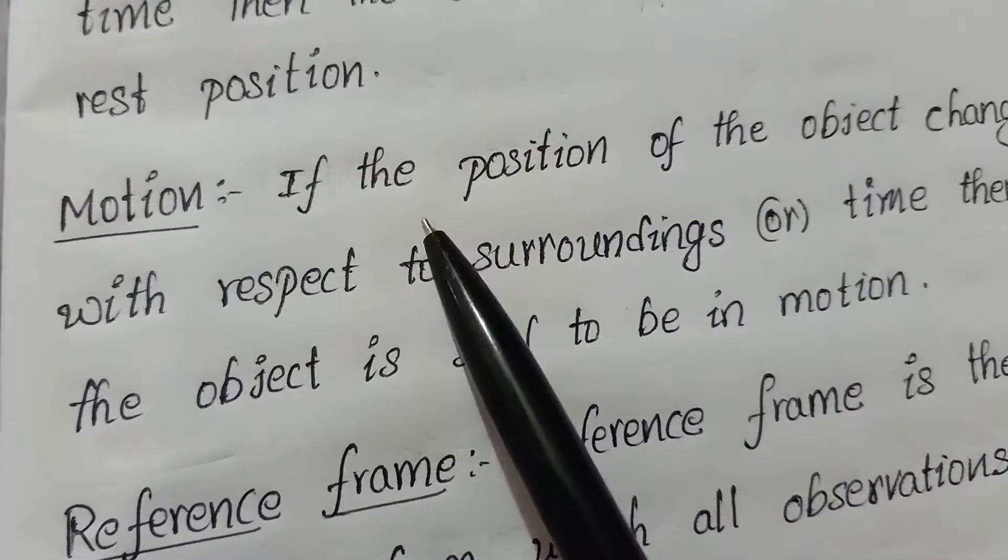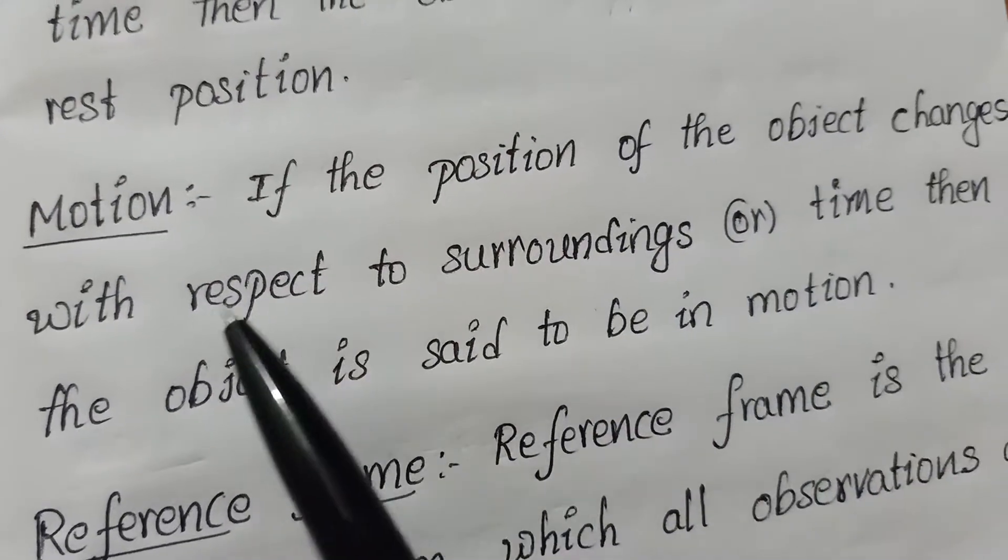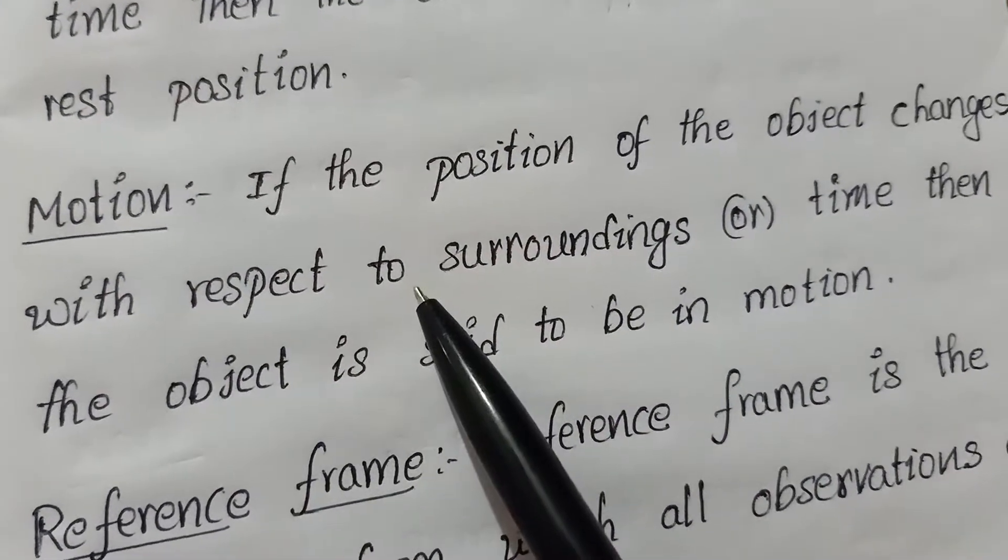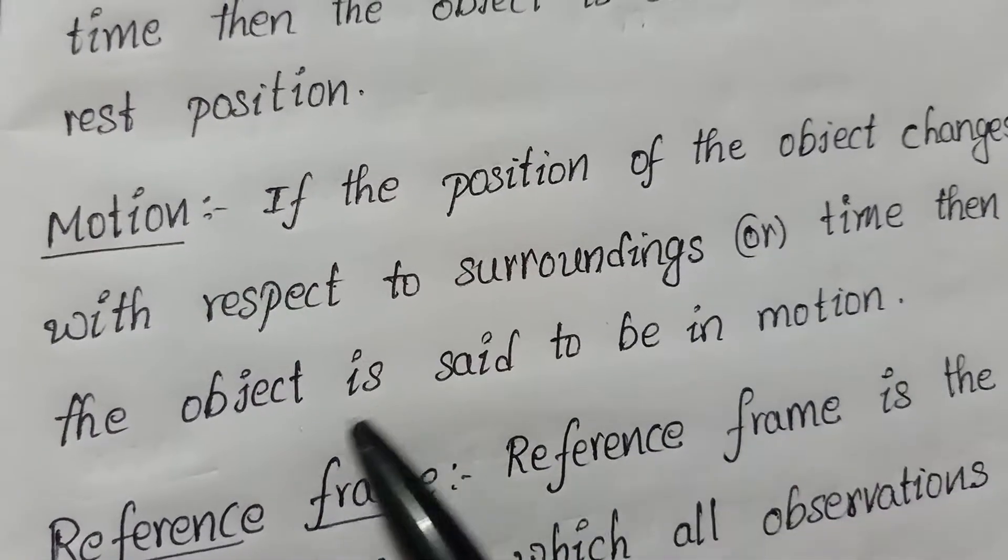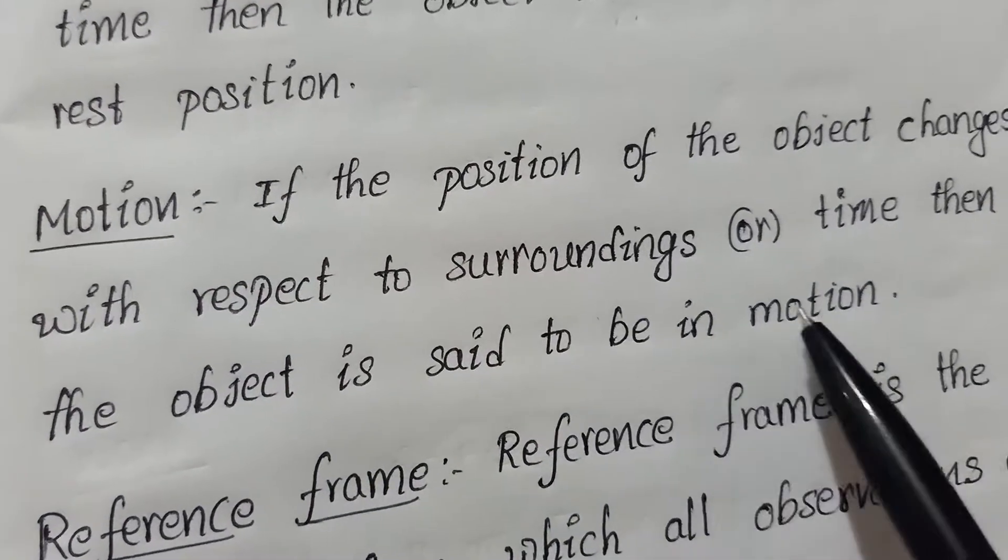Motion: If the position of the object changes with respect to surroundings or time, then the object is said to be in motion.